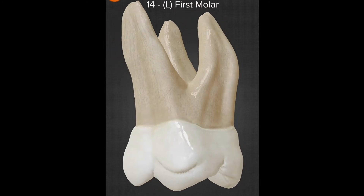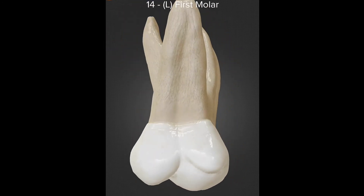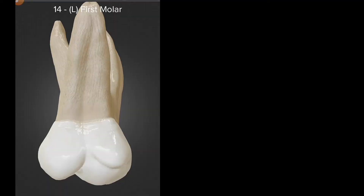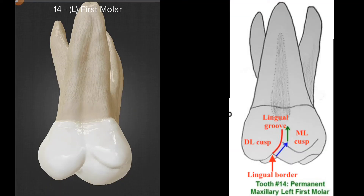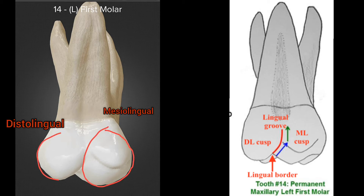From the lingual aspect, the crown is also trapezoid in shape. Only the palatal cusps are visible — that is, the mesiolingual and the distolingual cusps. The mesiolingual cusp is larger than the distolingual cusp, which is quite apparent visually.